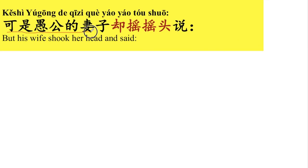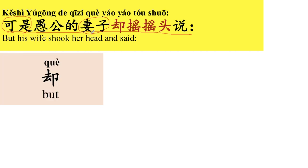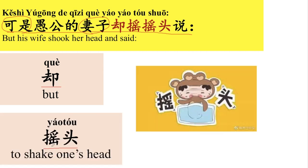可是，愚公的妻子却摇摇头说。可是就是但是，不过，but. 妻子 means wife. 却 also means but. 摇头 means to shake one's head. 可是愚公的妻子却摇摇头说。